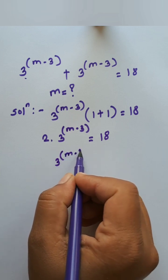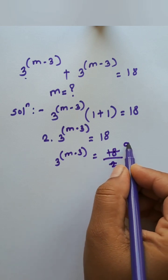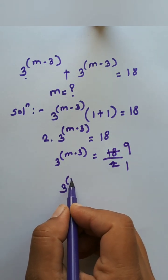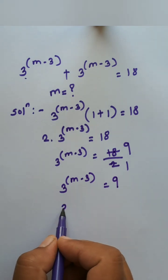2 is multiplied here. After going on the other side, it becomes divided. So write down 3 raised to m minus 3 equals 18 divided by 2. After solving this, we get 3 raised to m minus 3 equals 9.